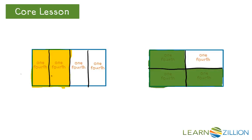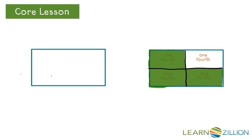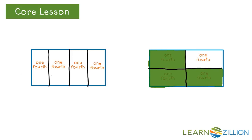I have two new rectangles on this page. I see the whole on the left is partitioned into four equal pieces, with each piece being called one-fourth. Now I want to count the number of shares by counting the unit fractions, or fourths, that are shaded. I see one-fourth, two-fourths. Two-fourths of the whole are colored.